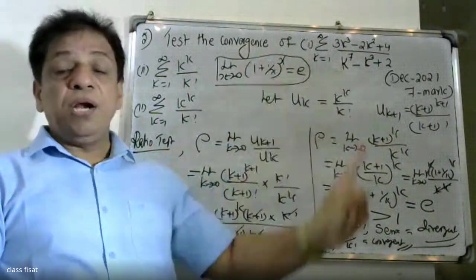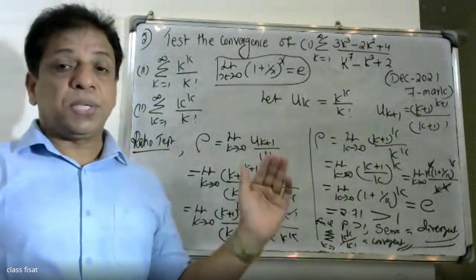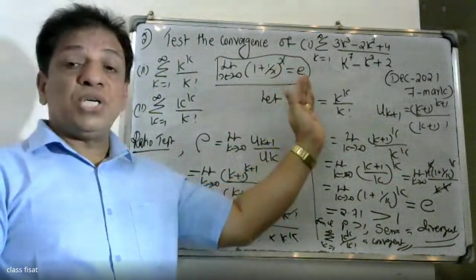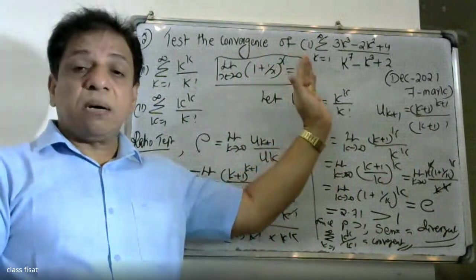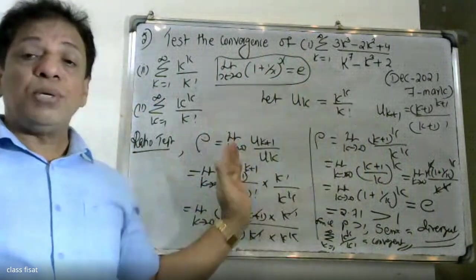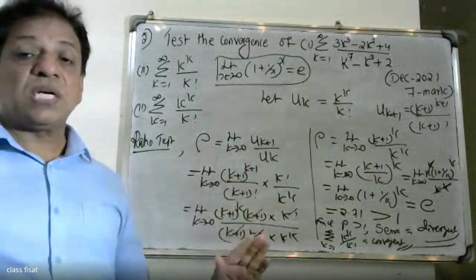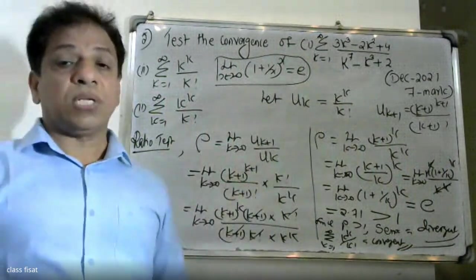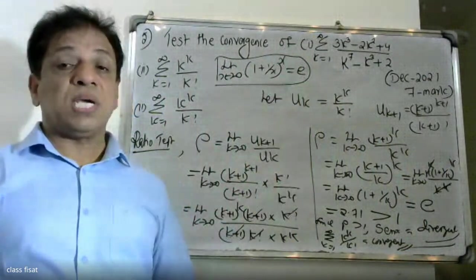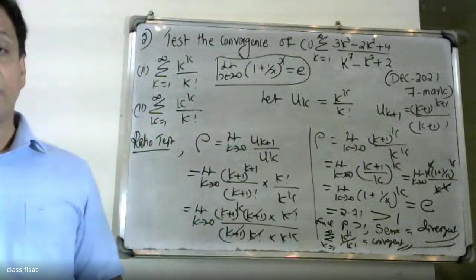We will see the limit comparison test and the ratio test applied. Looking at the working position, we apply the comparison test to conclude the results for both series.